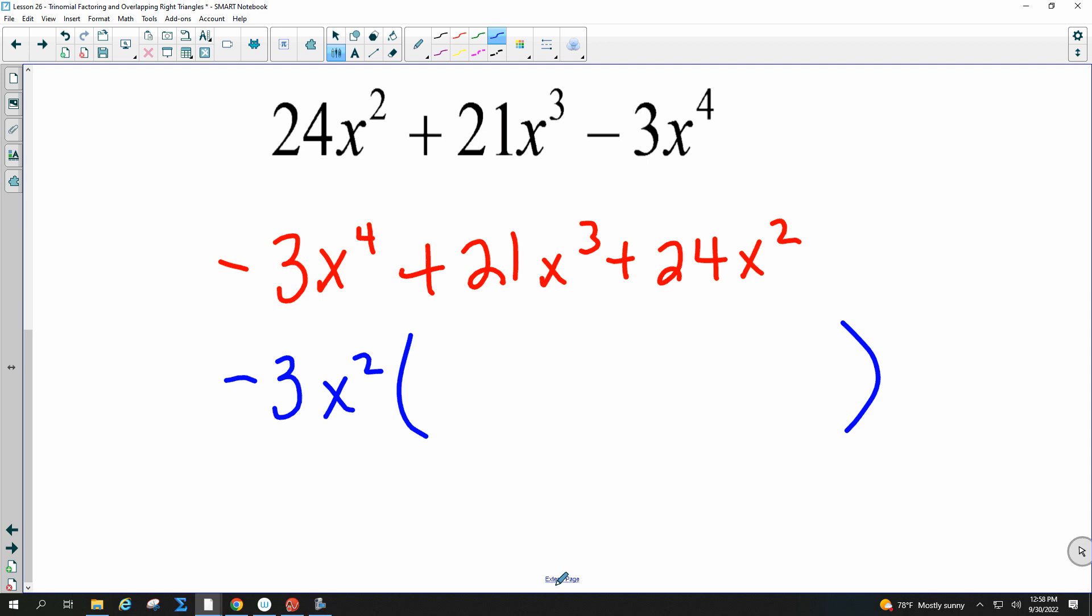So if I take out a negative 3x squared from this, Christian, what do I get? Right here. First term, I take out a negative 3x squared. What's left? Yeah. And now the next term, Lucy, what would be left if I took out a negative 3x squared? Good. A negative 7x. And, Hank, on the last one, what would be left? Yep. A negative 8.